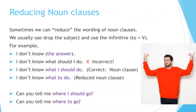Reducing noun clauses. Sometimes we can reduce the wording of noun clauses. We usually drop the subject and use the infinitive — 'to' plus verb. For example: 'I don't know the answer.' 'I don't know what should I do' — that's incorrect. 'I don't know what I should do' — that's correct using a noun clause. 'I don't know what to do' — in this case, we are reducing the noun clause. 'Can you tell me where I should go?' — that's a regular noun clause. 'Can you tell me where to go?' — that's a reduced noun clause.